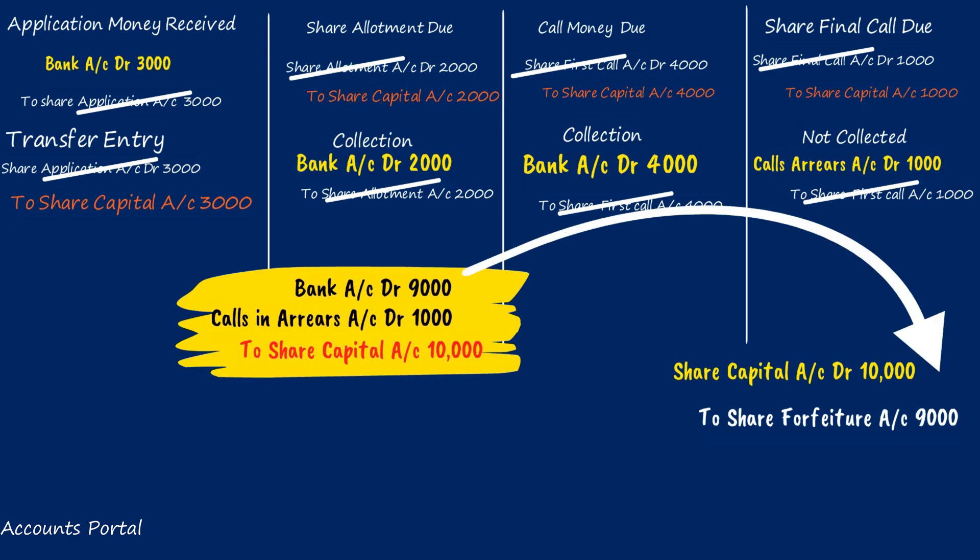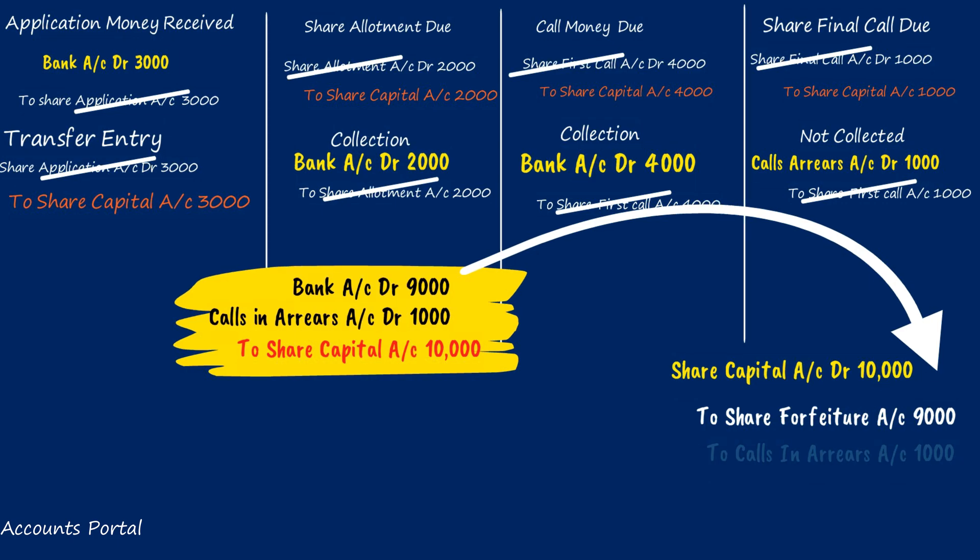On forfeiture, the company is making a profit while the shareholder is incurring a loss. To summarize: Share Capital account is debited because Brahmi is no more a shareholder; Calls in Arrears account is credited because the arrears will not be collected; and Share Forfeiture account is credited because the amount already received is the company's capital profit.